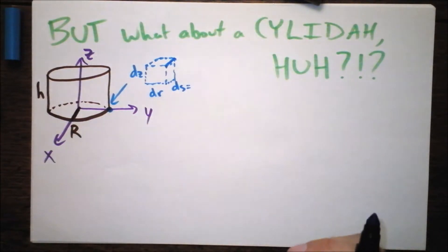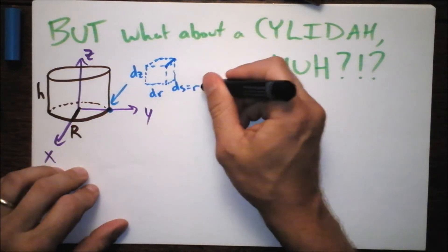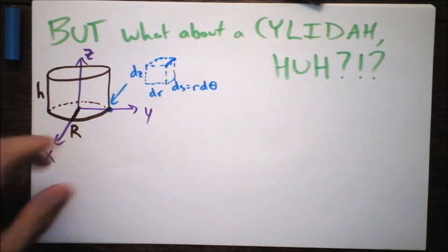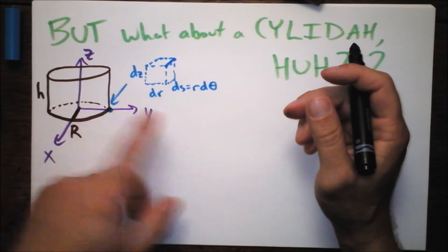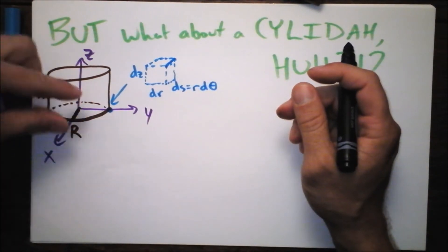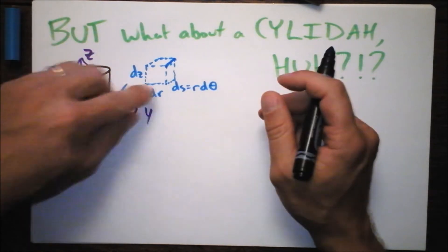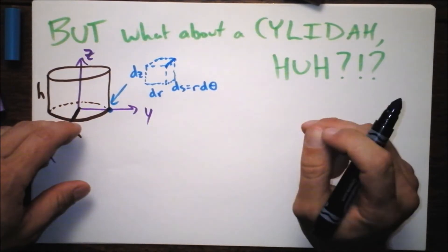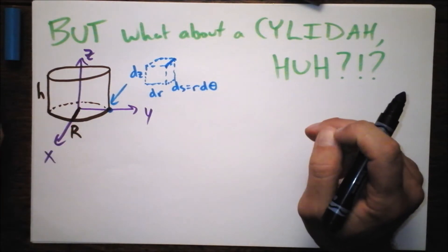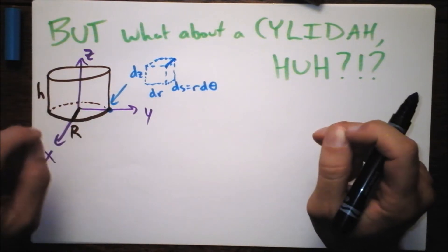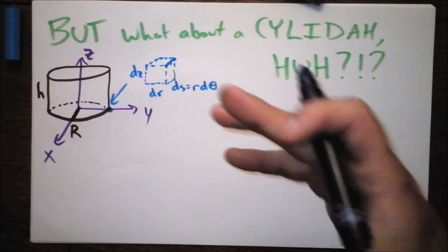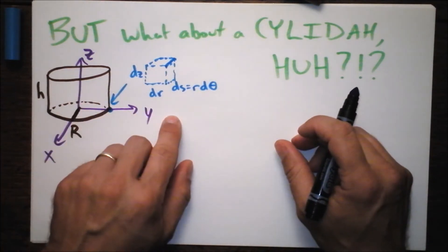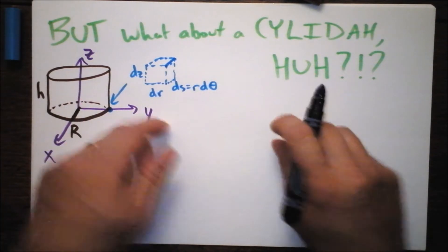Just as we saw with the platter, DS is going to be R times D theta. Because as we get farther and farther out, the width of that prism-y thing is getting bigger. It's still infinitesimal, but it's getting slightly bigger as we get farther out.